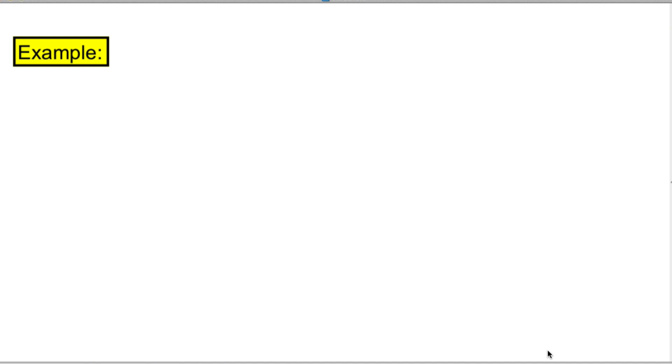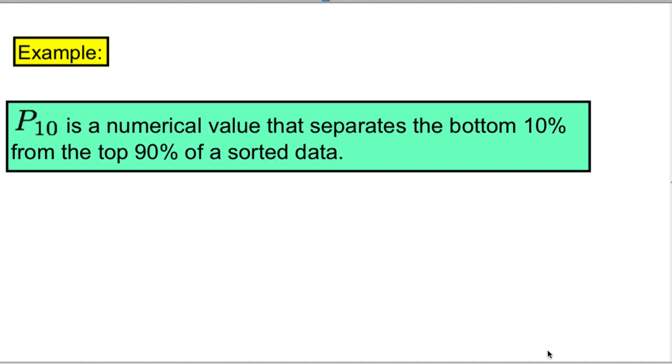Let's look at a couple of examples. P10 is a numerical value that separates the bottom 10 percent from the top 90 percent of the sorted data.